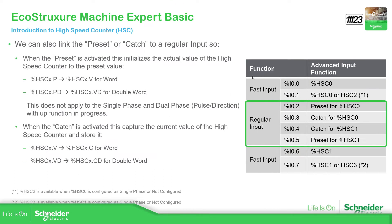At the fast input, there are some additional items you can configure: the preset and the catch. You can assign the preset and catch configuration to digital inputs, so you don't have to use the software if you don't want to. If you want to use the preset, you can assign one of the digital inputs, and depending on which high-speed counter you are using, you must assign to that specific input — the software will tell you which one to use.